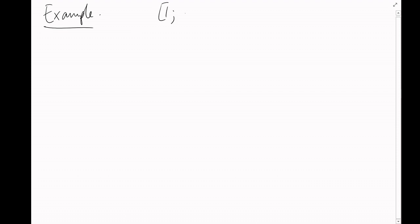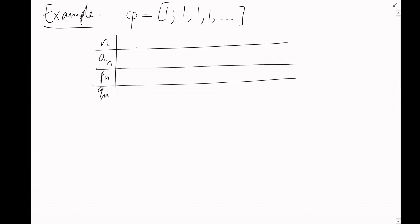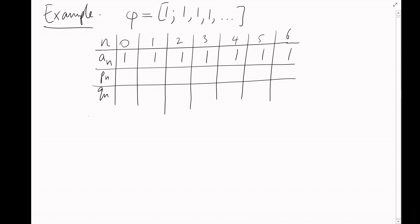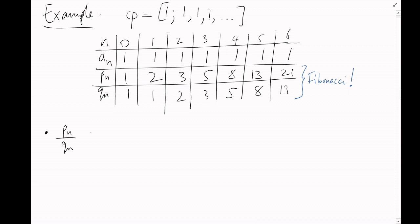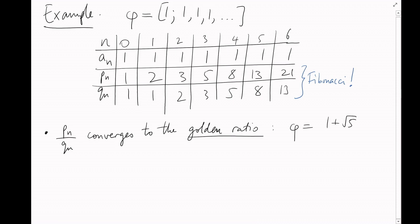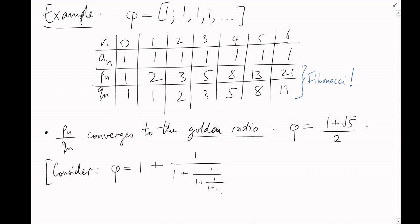As an example, let's calculate the continued fraction with all partial denominators equal to 1. I'll call this number φ. Substituting into the recurrence relations, both recurrences become the Fibonacci recurrence, offset by 1. The quotients of successive Fibonacci numbers converge to the golden ratio φ = (1 + √5)/2. Alternatively, since the continued fraction of φ is repeating, we can substitute it into itself to get a quadratic equation giving this solution.